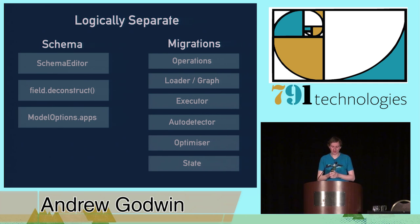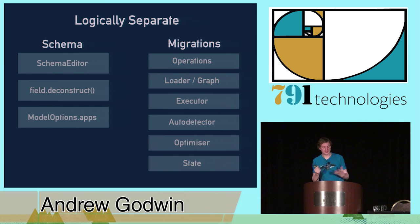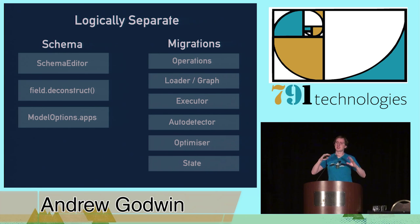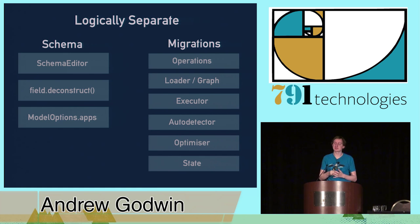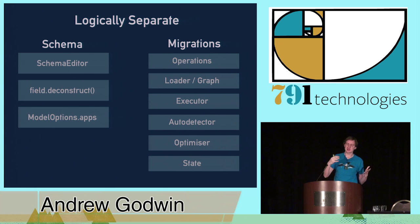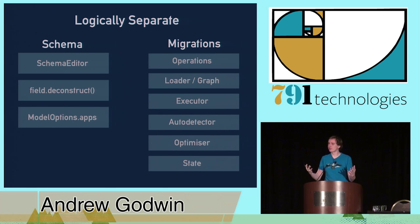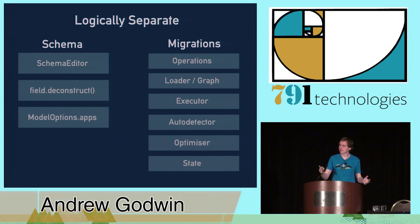I'll briefly go through the different parts. The schema editor is the abstraction over DDL — the piece of code that takes the idea of modifying databases and adds a schema editor to every backend in Django. You can do connection.schema_editor, get one of them, and it has methods like add_model, add_field, alter_field, remove_field, change_unique_together, and all this kind of stuff.